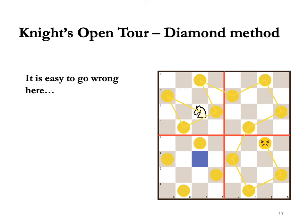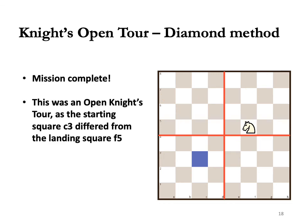Only one colour to go. With the yellow diamonds gone, the knight's tour is complete. It's important not to go astray in the final steps. If you happen to go the wrong way, as in the diagram, set up the diamonds of the given colour again and restart from c6. It's a good idea to mark the square where the knight collected the last counter of the previous colour. Here, the last green counter was on c6. Mission complete. Note that this knight's tour was open — the starting square c3 differed from the landing square f5.